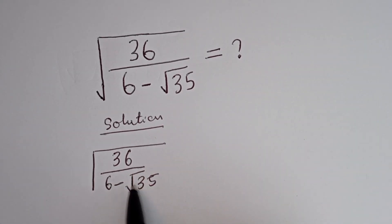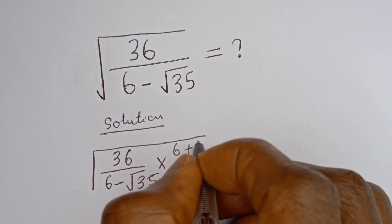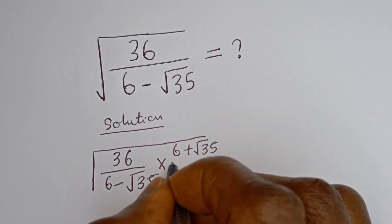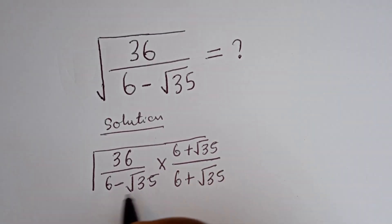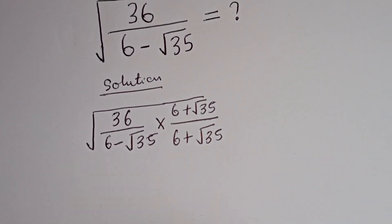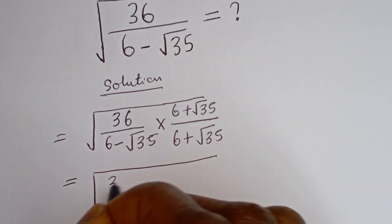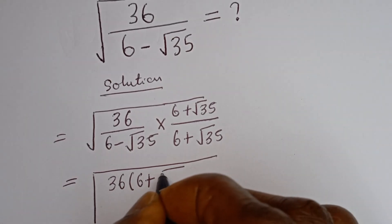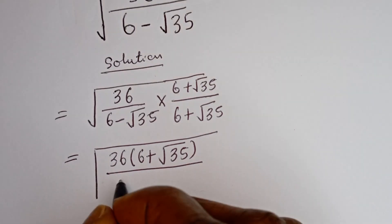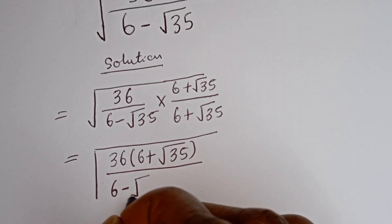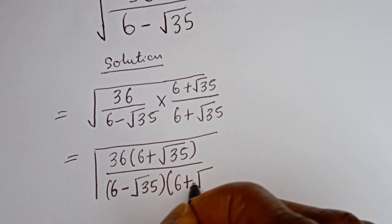Let's rationalize the denominator. That is, multiply by 6 plus square root of 35 divided by 6 plus square root of 35. This gives us square root of 36 bracket 6 plus square root of 35, divided by 6 minus square root of 35 bracket 6 plus square root of 35.